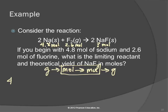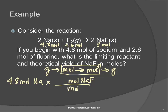Take 4.8 moles of sodium and figure out how many moles of sodium fluoride we can make. We multiply by moles of sodium fluoride and divide by moles of sodium. From the balanced equation, there's a 2 in front of sodium and a 2 in front of sodium fluoride — the 2s cancel out — giving us 4.8 moles of sodium fluoride.